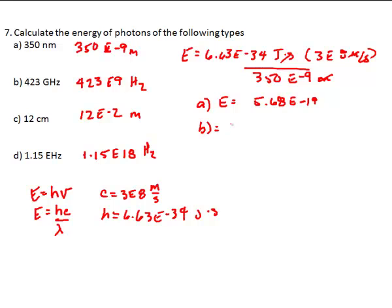So, B is equal to 6.63 E to the negative 34th joules per second. Times 423 E to the 9th hertz. So, E is equal to 2.80 E to the negative 22nd joules.